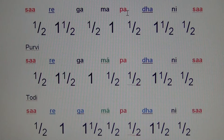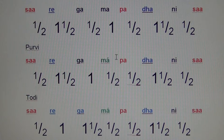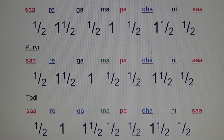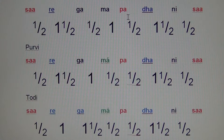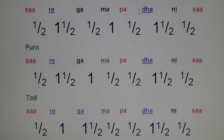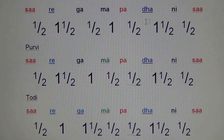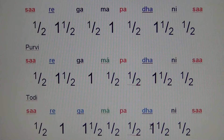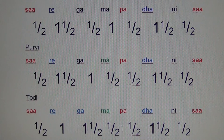You would notice that from the note pa, for these three Thaats, they are all pa, dha, ni, sa — with dha being komal — and they remain the same.